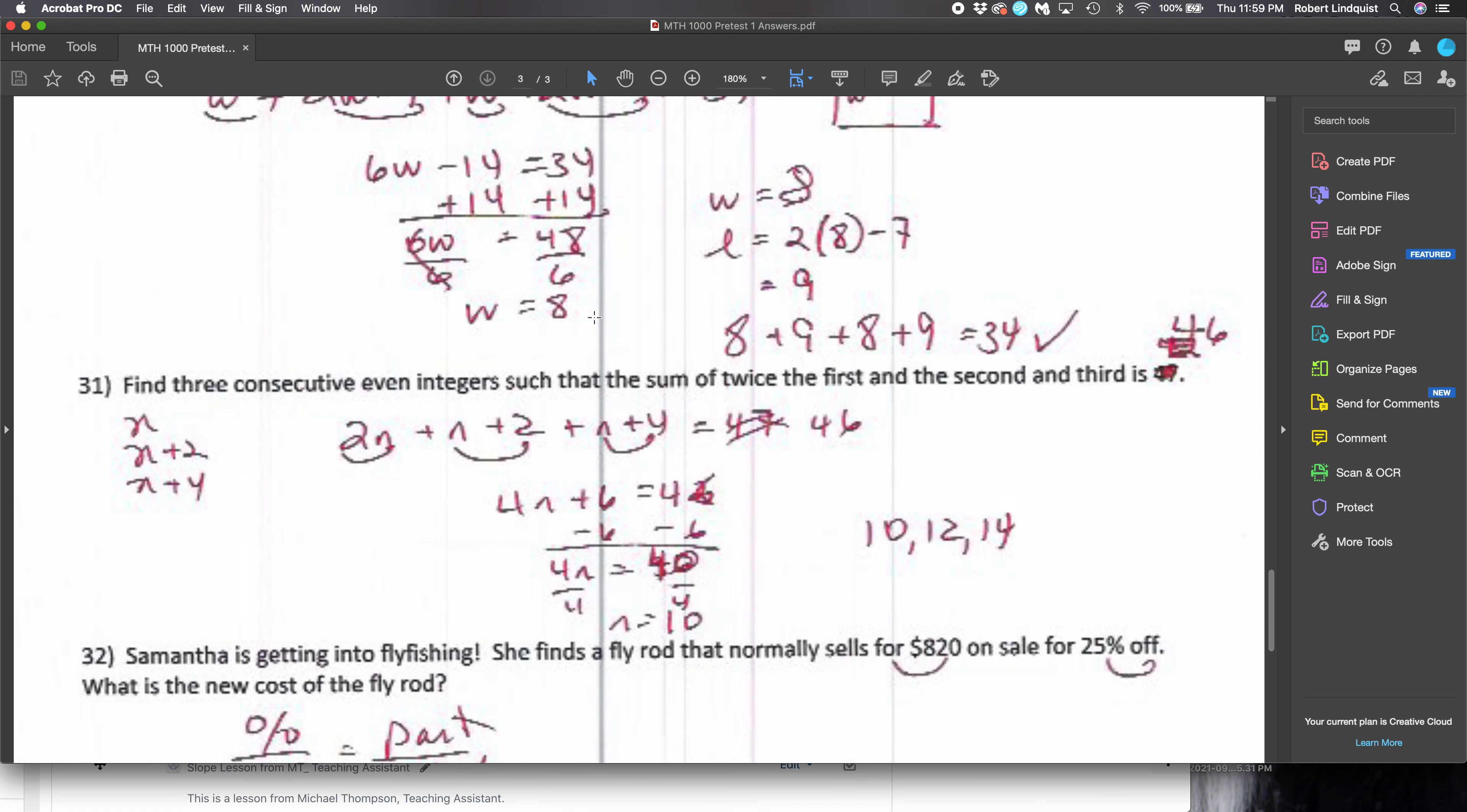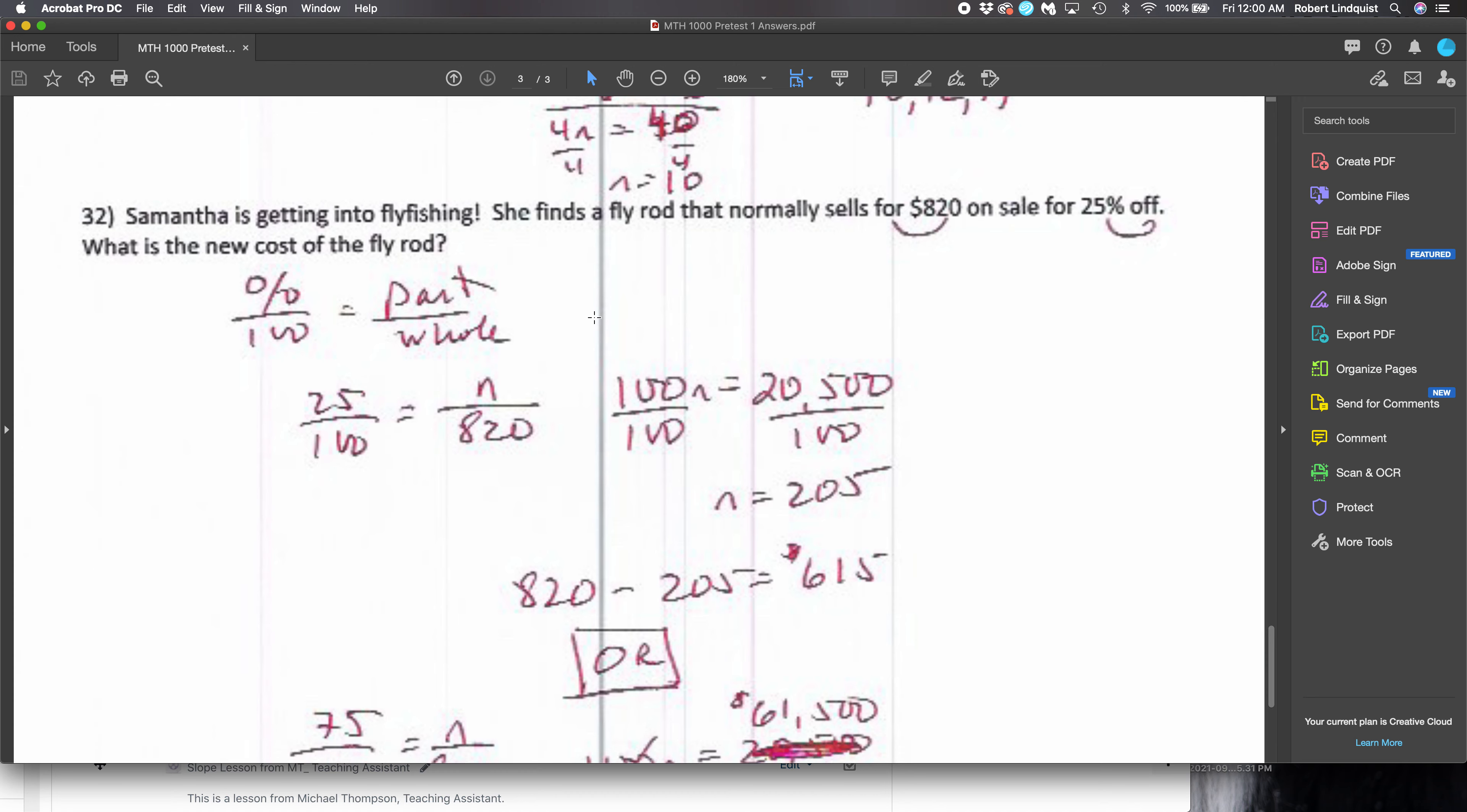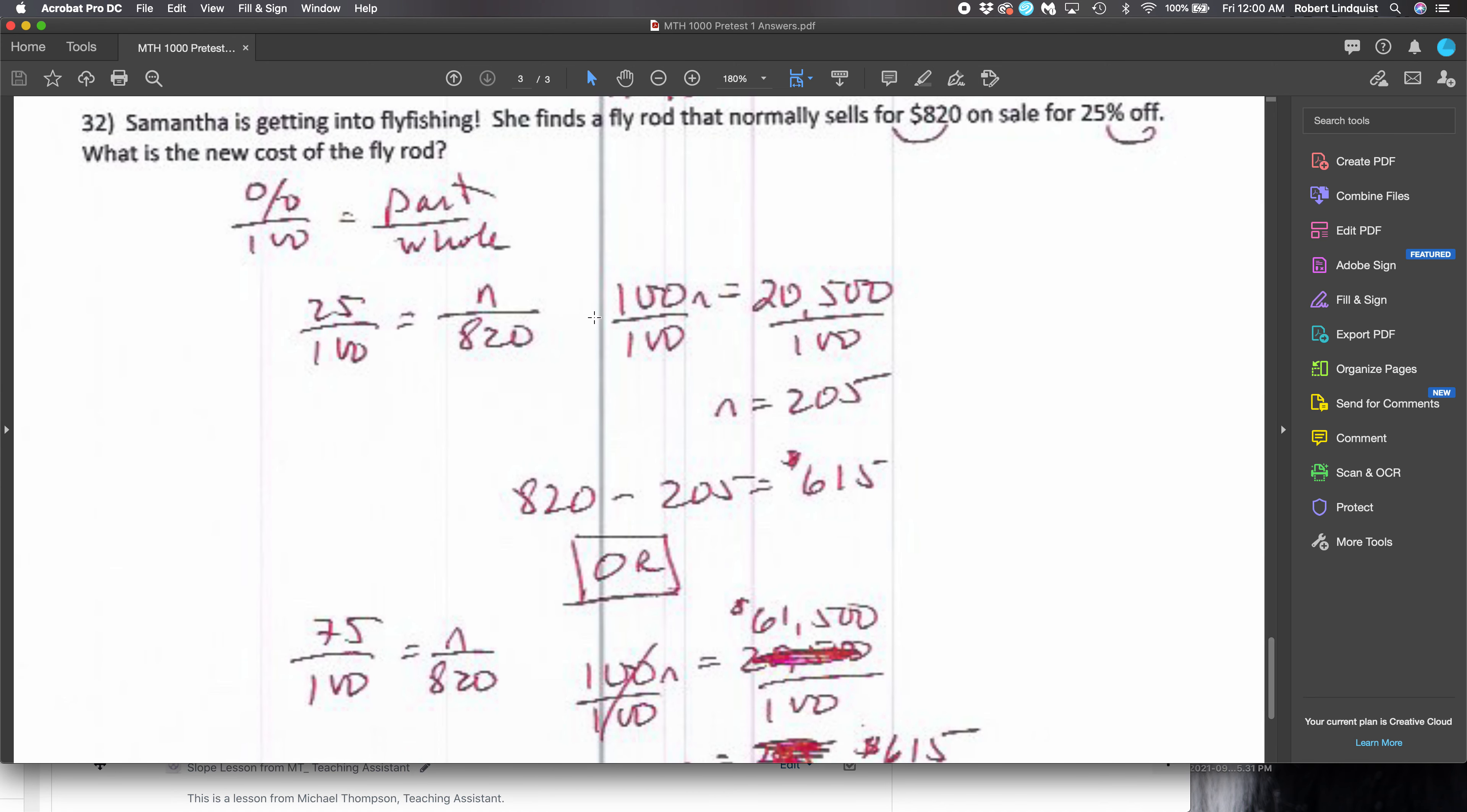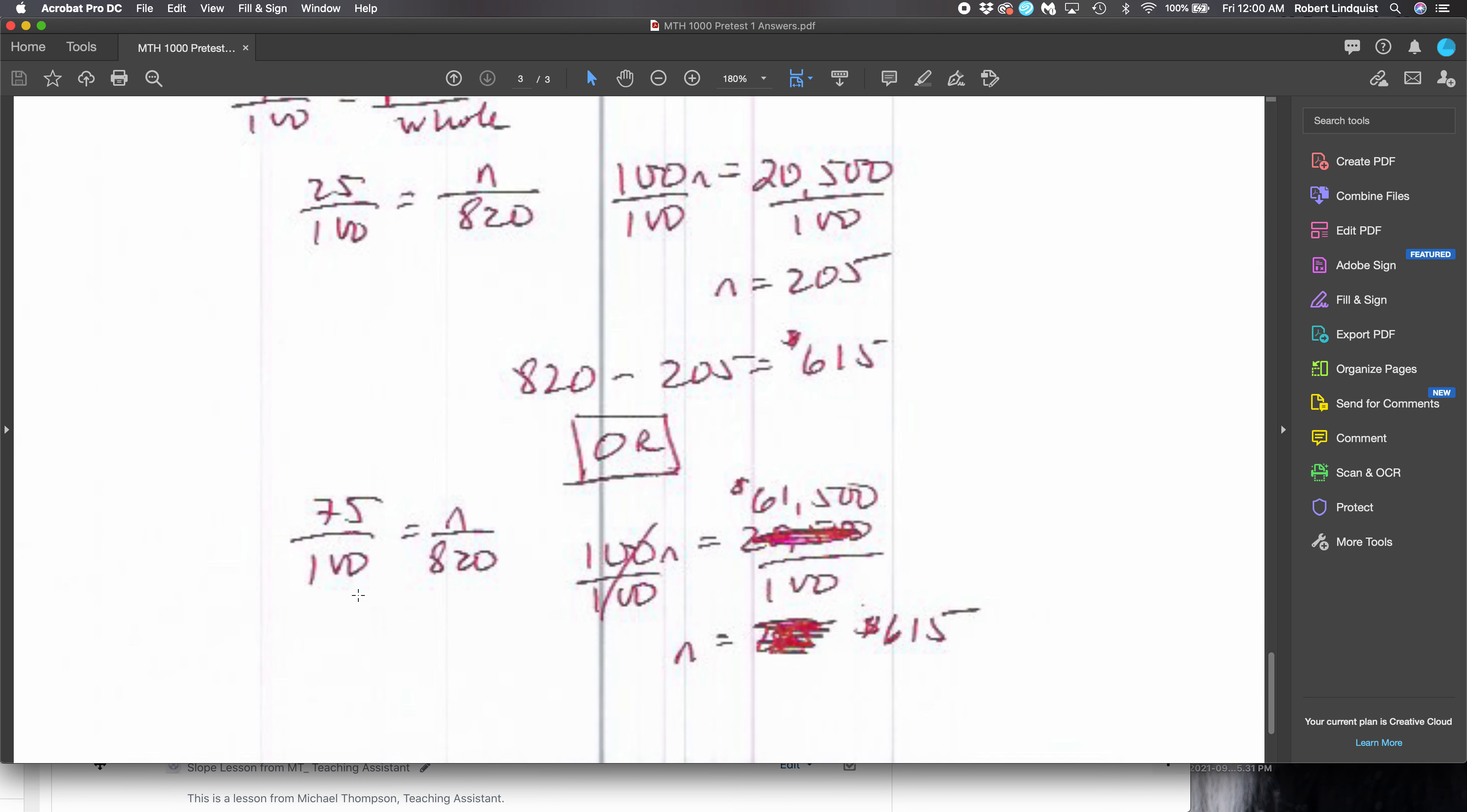And then 31. And then number 32 done two ways. With number 32 done two ways, I want you to realize that you can find out what the 25% discount is - $205 - and then subtract it from the original price. Or you can say, look, if I'm taking 25% off, then 75% is remaining, and if you do that the correct answer shows up.